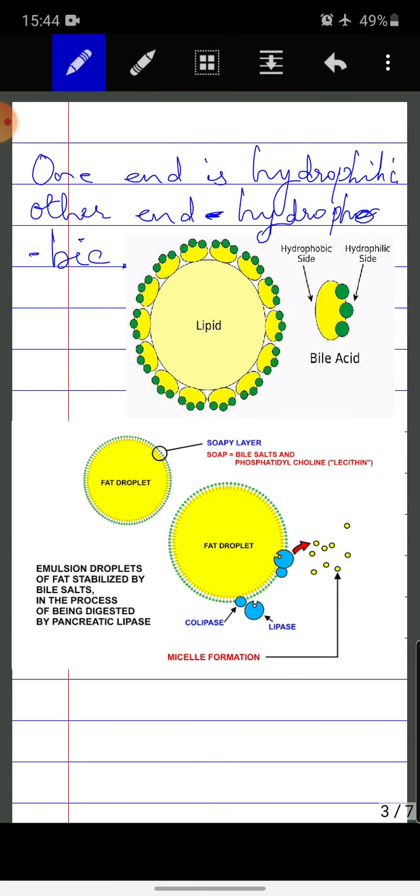Now, let us just try to understand the structure of the salt. One end is hydrophilic. Hydrophilic is water loving side. This is the green sides. These are hydrophilic sides. And the other sides, these are hydrophobic. So, these are hydrophobic sides and these are hydrophilic sides.